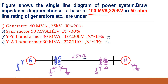First of all, we are going to choose the base for the overall power system. The base already given is 100 MVA. So, base MVA equals 100 MVA. This 100 MVA is the base MVA for all the components in the power system.